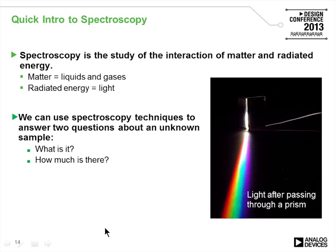Spectroscopy is the study of the interaction between matter and radiated energy. Matter — liquids and gases — when heated, generate some sort of light. If you try to pass light through a liquid or a gas, it will absorb certain colors and pass others. Looking at the spectrum of a particular gas or liquid will tell you what the substance is by where the spectral lines occur, and how dense it is by how much light passes through.